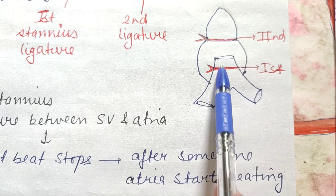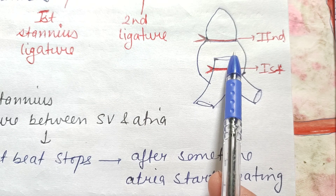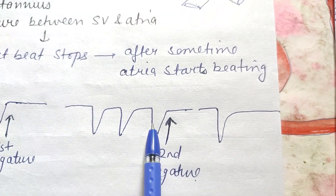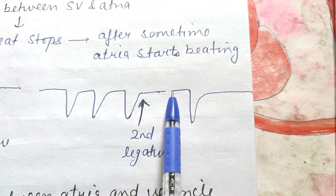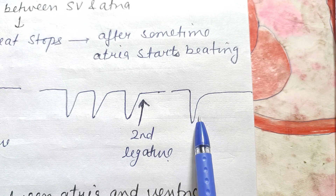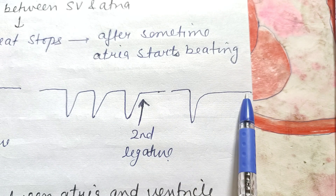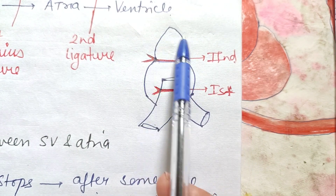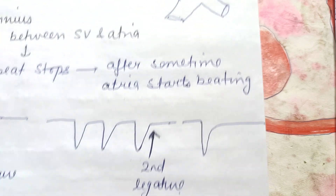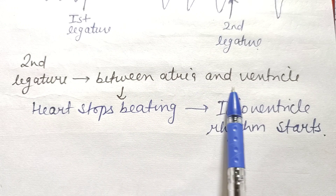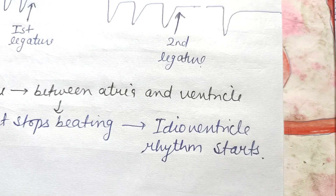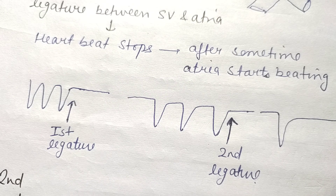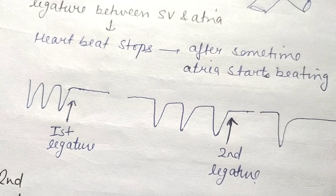By blocking the sinus venosus, the atria come into play and take the role of pacemaker, starting an atrial rhythm. When the second ligature is tied, blocking the atria, the heart stops beating again, and after some time an even less frequent rhythm comes into play — that is the idioventricular rhythm driven by the ventricles. So second ligature between atria and ventricle causes the heart to stop, and the further less frequent rhythm that follows is the idioventricular rhythm. That covers all the properties of cardiac muscle in amphibian physiology.